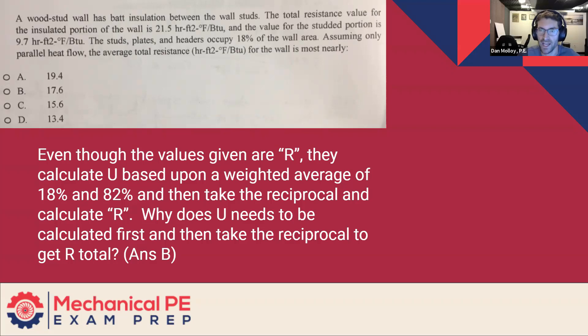A wood stud wall has bat insulation between the wall studs. The total resistance value for the insulated portion of the wall is 21.5, and the value for the studded portion is 9.7. The studs, plates and headers occupy 18% of the wall area.